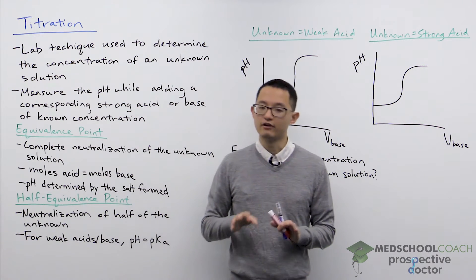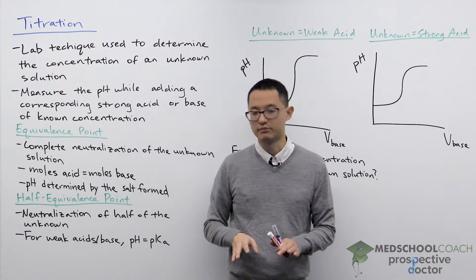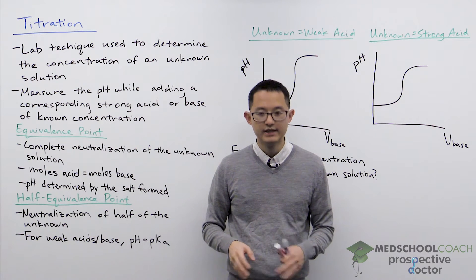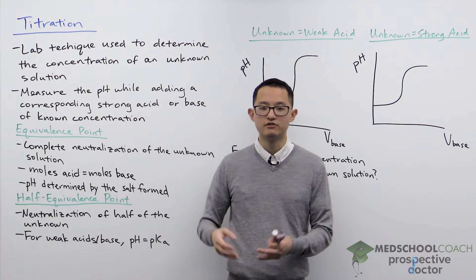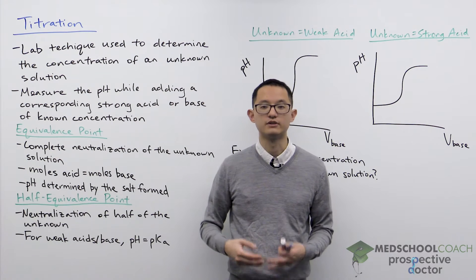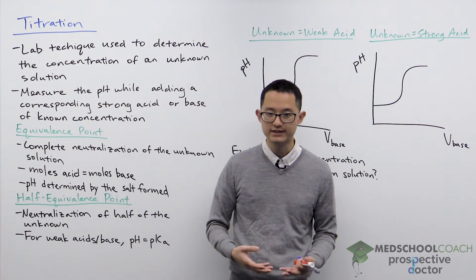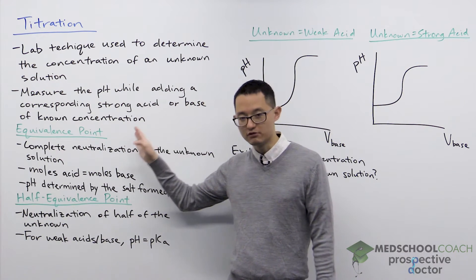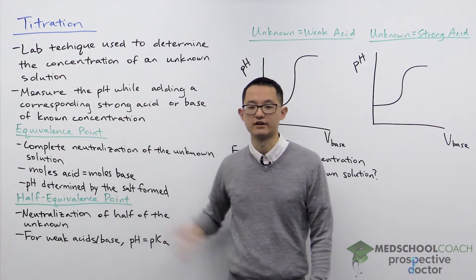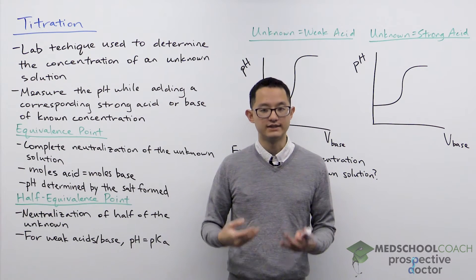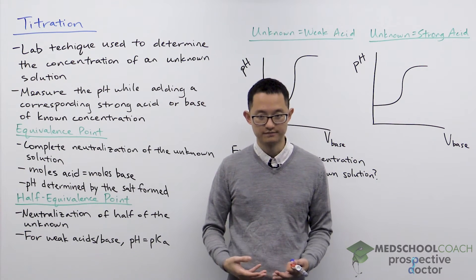There are some additional terminology you might see on the MCAT. The unknown solution is sometimes also called the analyte. The strong base or strong acid of known concentration that you're adding is called the titrant.